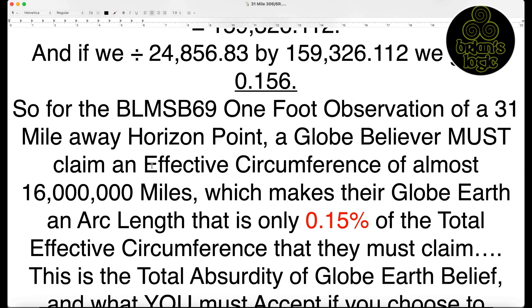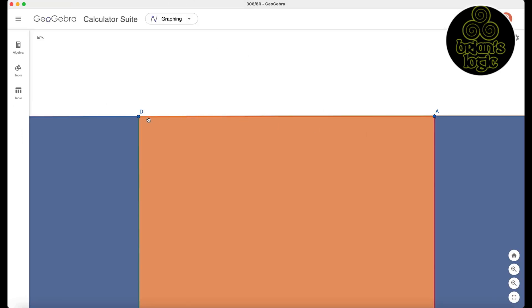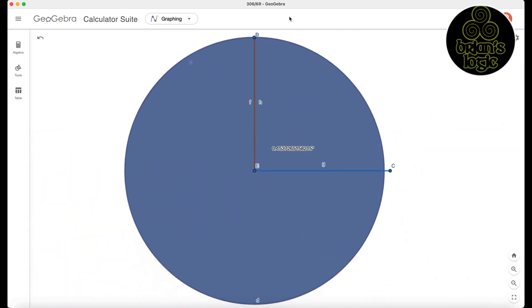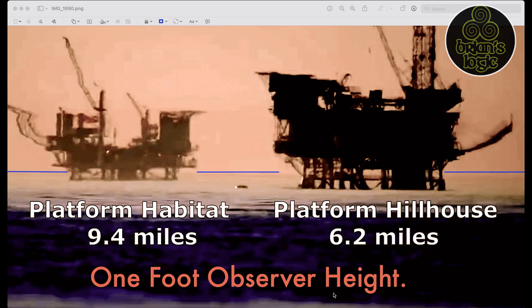So a globe believer must claim an effective circumference of almost 16 million miles. See this orange line going along the top here? The globe believers must claim that their globe became this orange line. That's supposed to be just under 25,000 miles. This is what it becomes. Their globe is up in here as a tiny outline. That's the claim from our opposition.